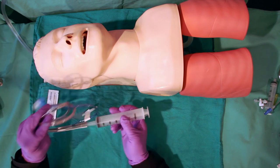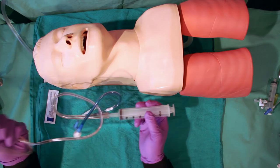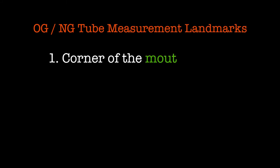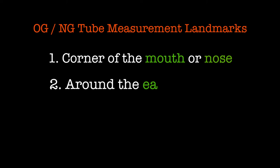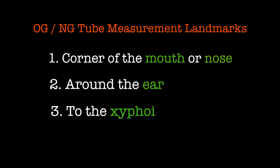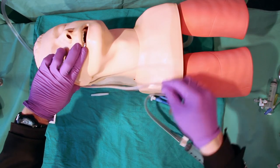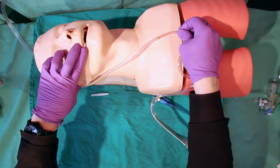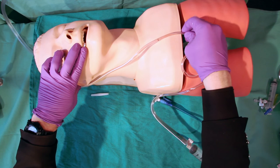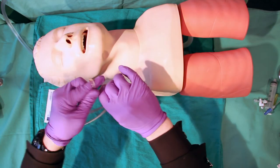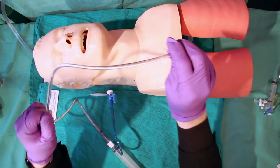Now that you have the syringe attached, you're ready to confirm tube placement once you're in. Here we go — from the corner of the mouth, around the ear, to the xiphoid process. Make sure you get a tight grip on the tube and maintain your position so you don't lose your landmark. I like to wrap it around my finger once to maintain the tube position.